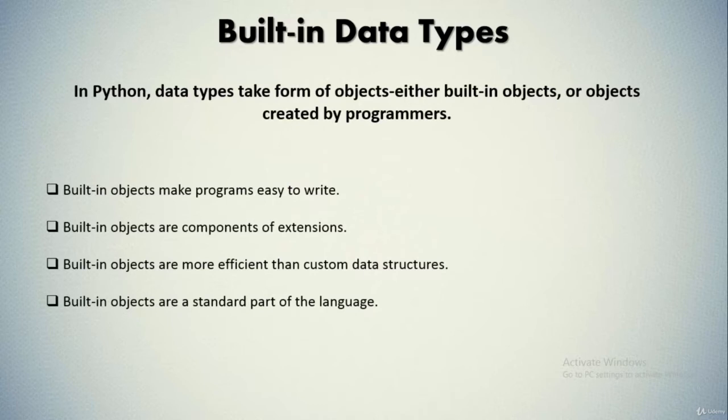Secondly, built-in objects are components of extensions. For more complex tasks you may need to provide your own objects using Python classes or C language interfaces. But as you'll see later in this course, objects implemented manually are often built on top of built-in types such as lists and dictionaries. For instance, a stack data structure may be implemented as a class that manages or customizes a built-in list.